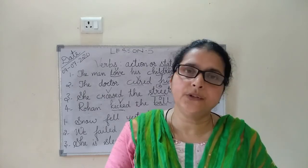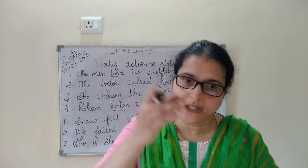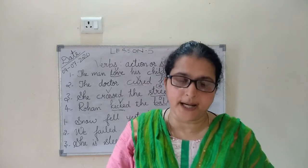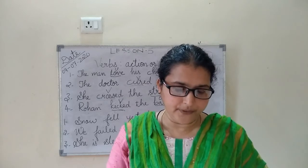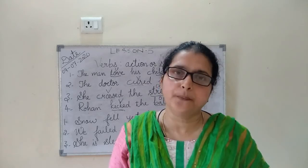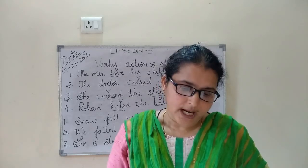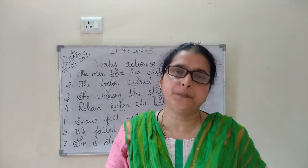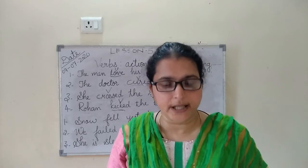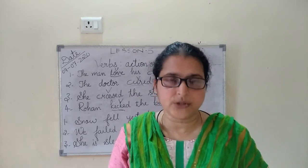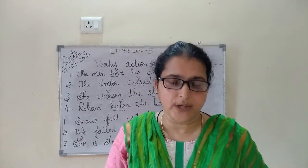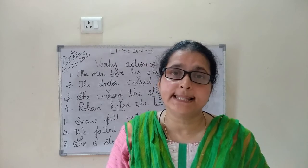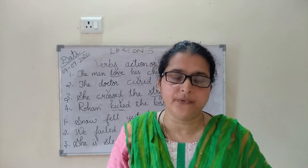Transitive verb is again divided into two parts: a verb with a direct object and a verb with an indirect object. Now we will discuss what is a transitive verb.